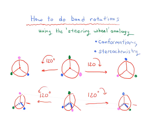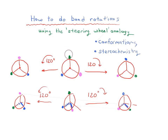Now, how does this relate to organic chemistry? We're not dealing with steering wheels with funky tassels in organic chemistry. Imagine that the steering wheel represents a tetrahedral molecule viewed from one end. Molecules of carbon that are sp3 hybridized are tetrahedral, and if you look at them end on, you won't be able to see the shaft — it's hidden behind. So instead of green, pink, and blue tassels, imagine three different groups: a green H, a blue CH3, and a pink Cl.